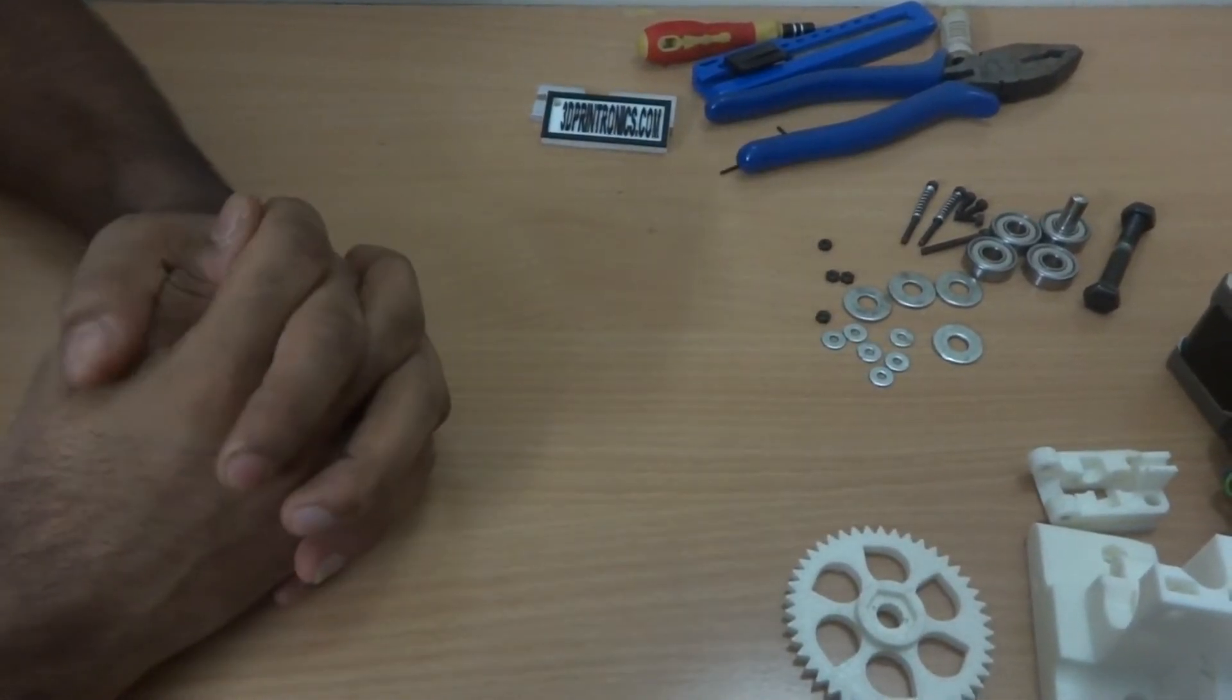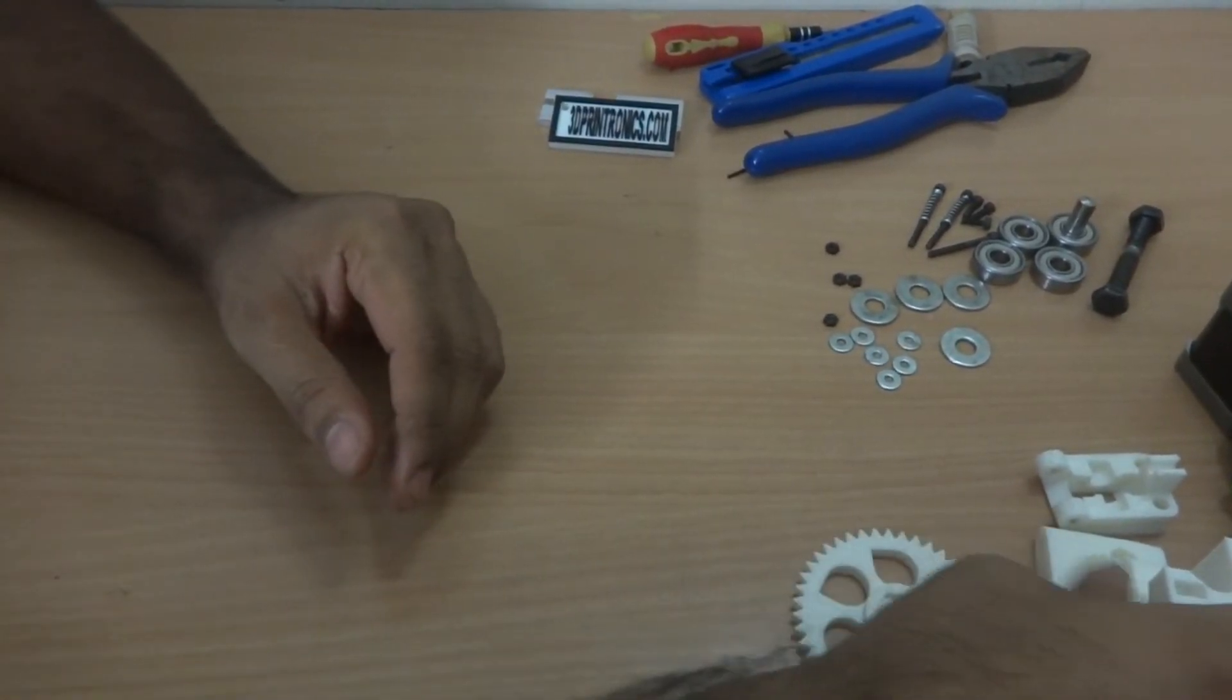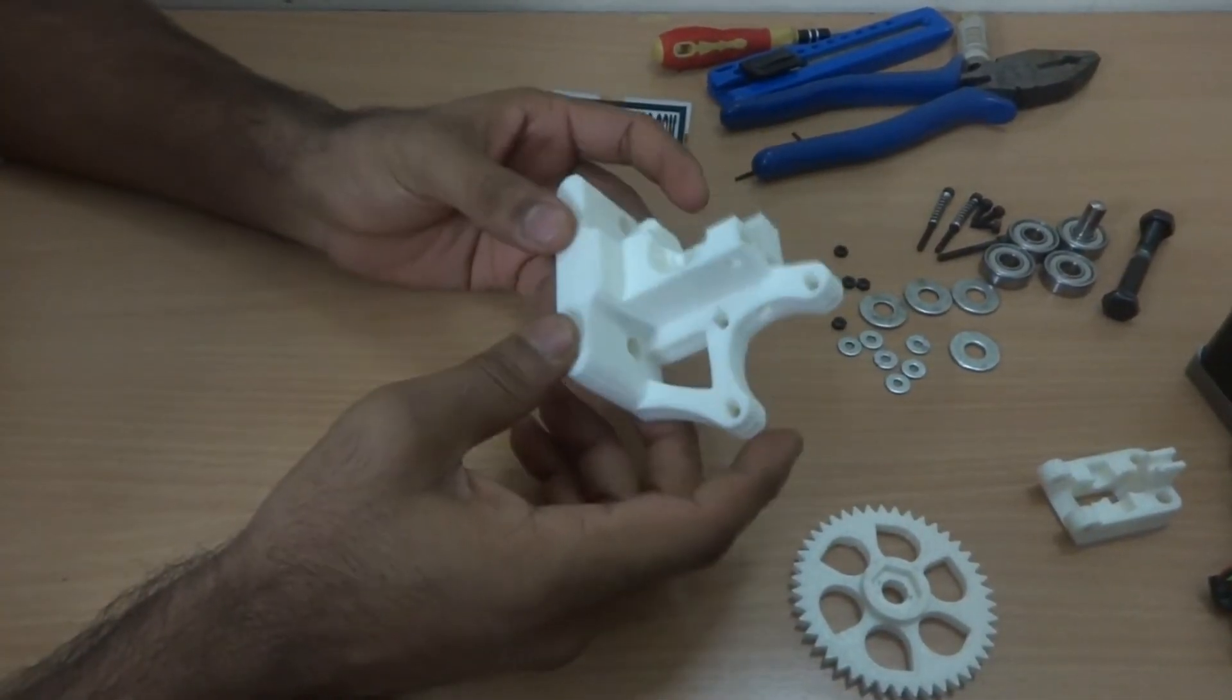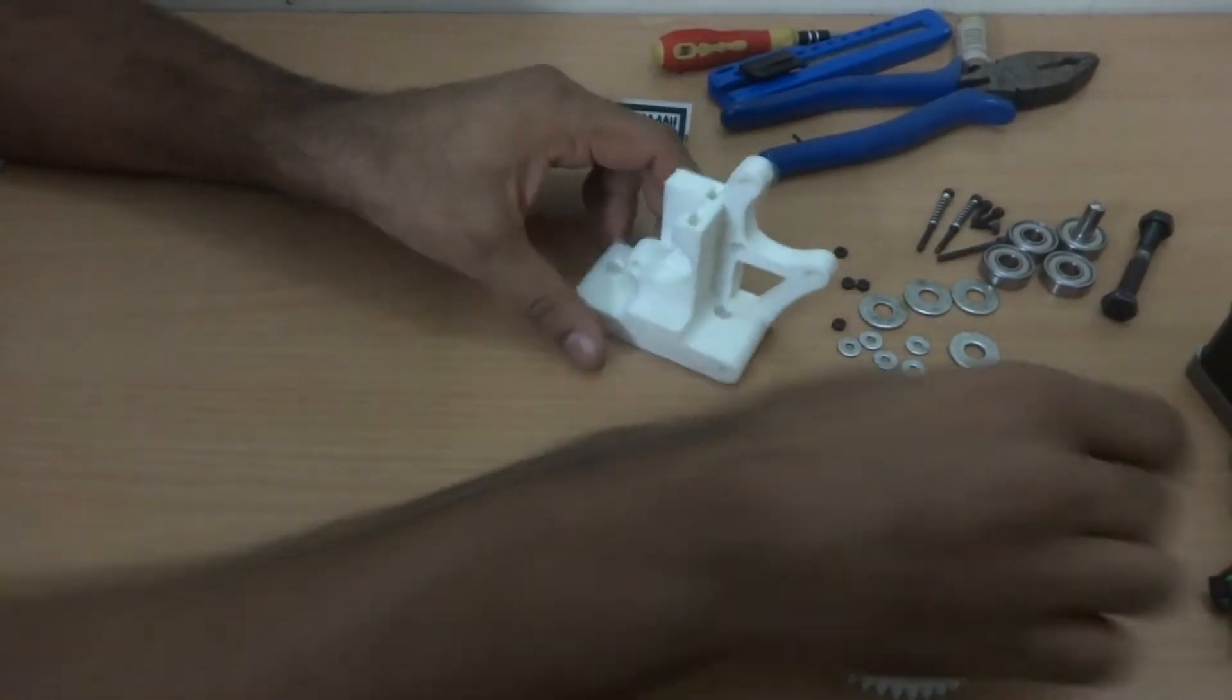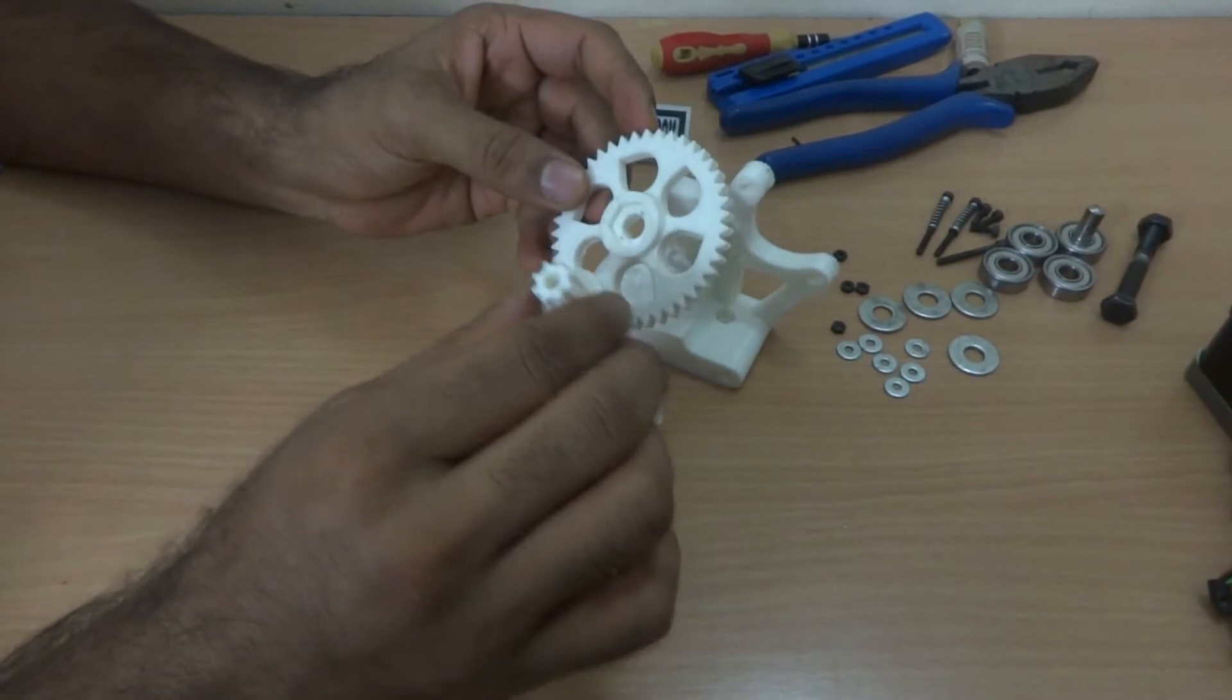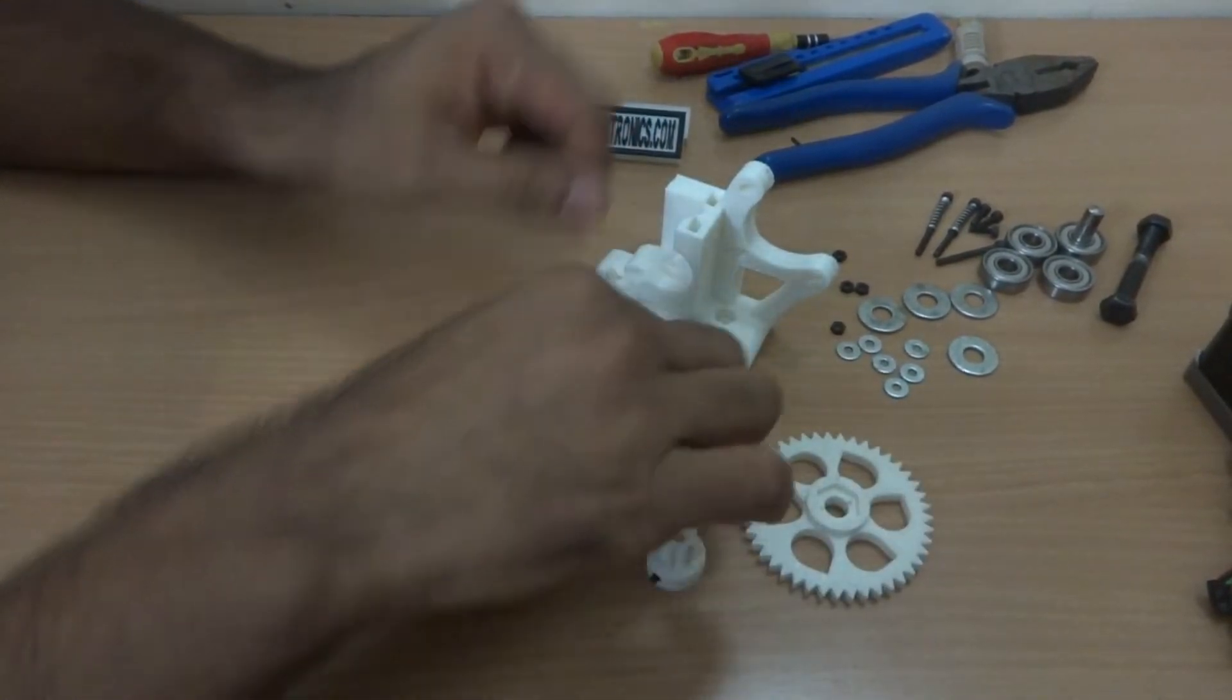Now let's identify the parts which will be required for this build. Firstly the plastic parts. This is the Wade's extruder, the larger part. This is the idler, this is the big gear and this is the small gear. These are the plastic parts which come in the kit.